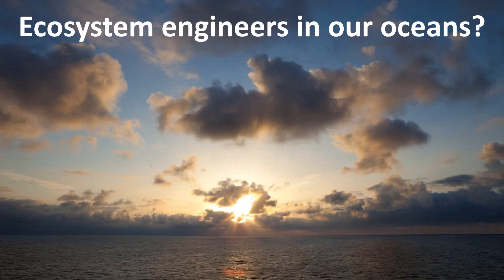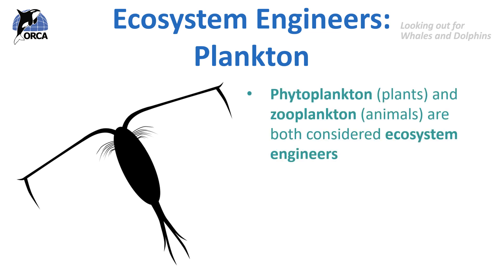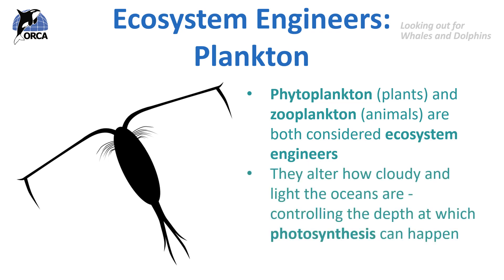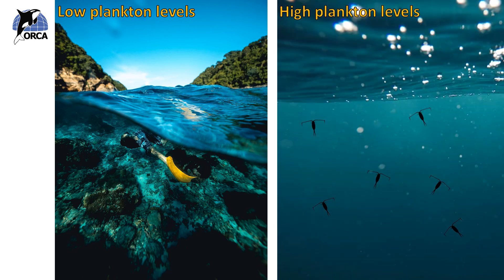So there are some examples of ecosystem engineers on land. Do you think there are ecosystem engineers in our oceans? There certainly are. Phytoplankton, which are microscopic plants, and zooplankton, microscopic animals, are both considered ecosystem engineers. They alter how cloudy and light the oceans are, controlling the depth at which photosynthesis can occur. Looking at the picture on the left, it's a beautiful clear sea with not a huge amount of plankton. You can see that the sunlight shines all the way down to the bottom of the sea. However, looking at the picture on the right, this sea looks very cloudy and murky, simply because there is so much plankton living in this area of sea, all through the water column.